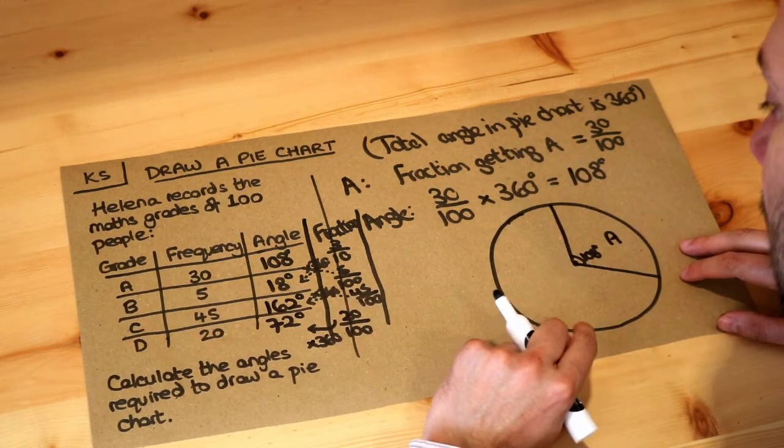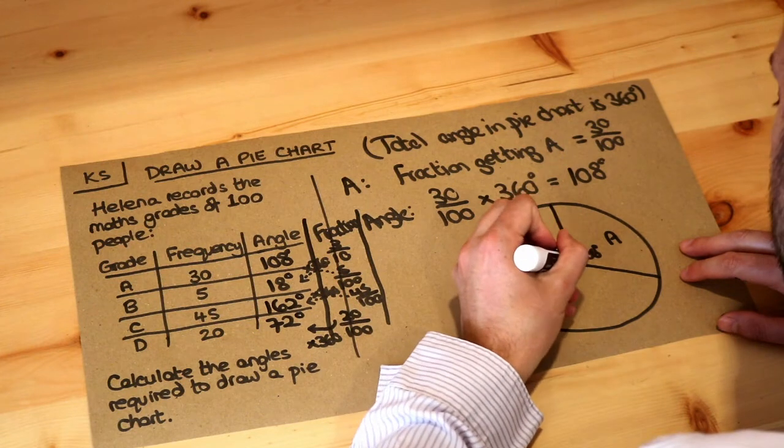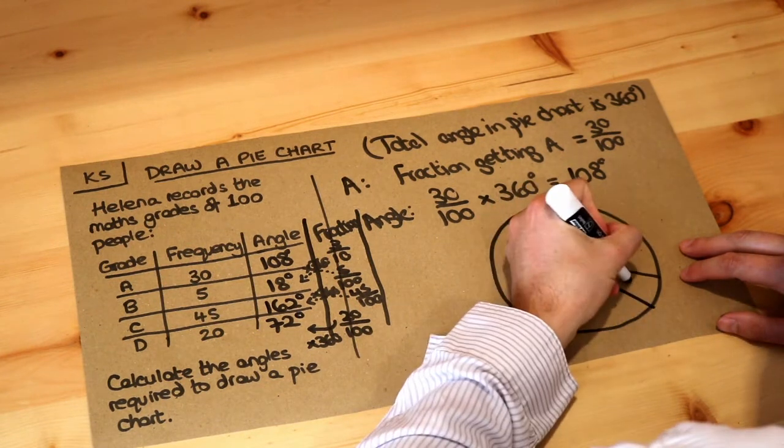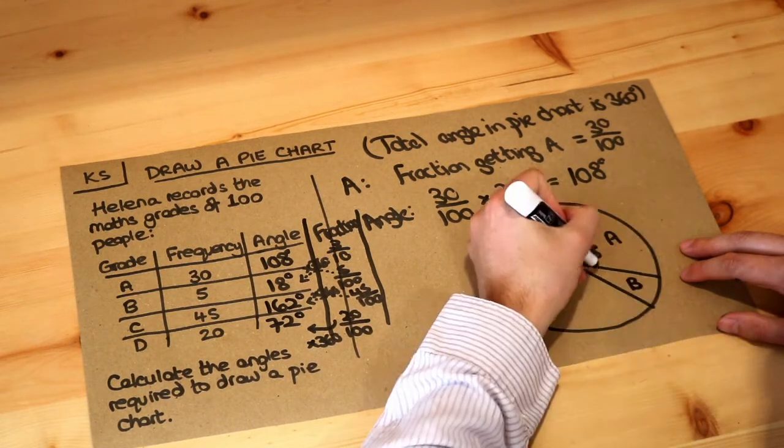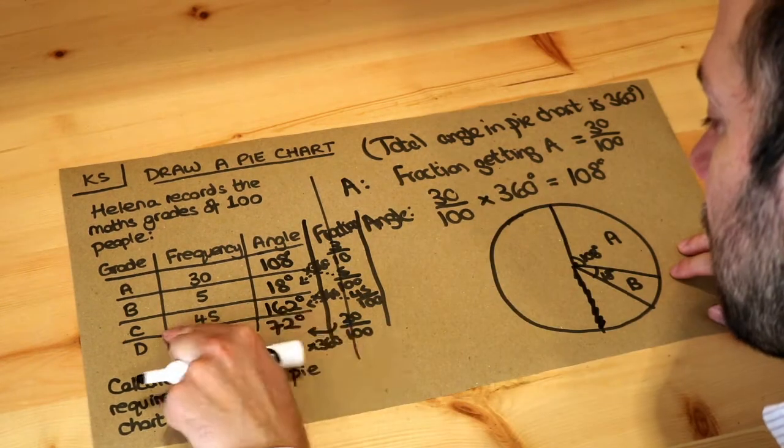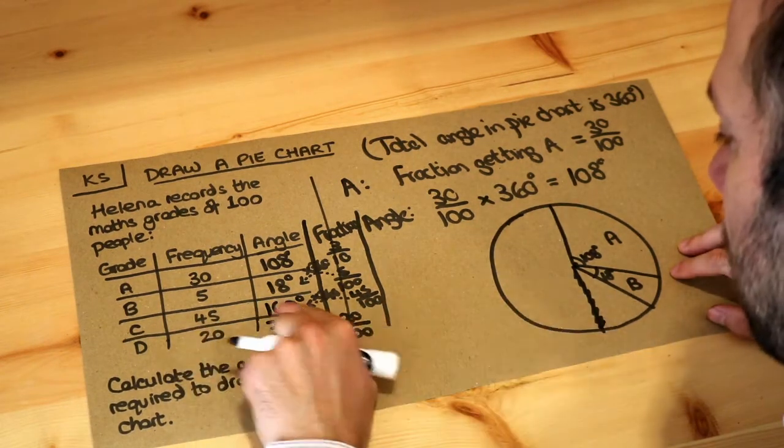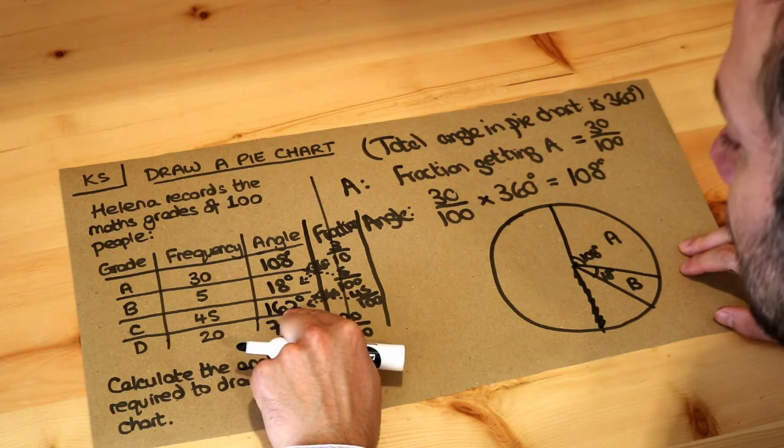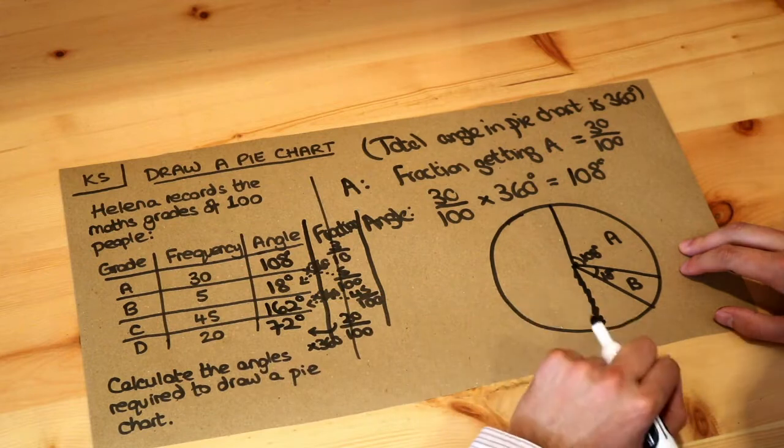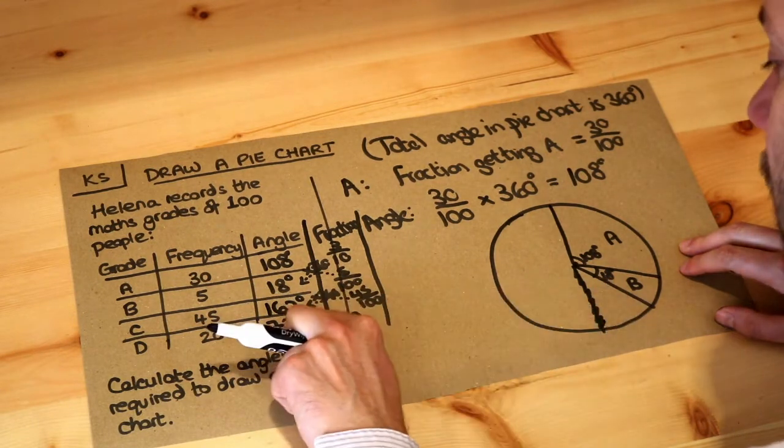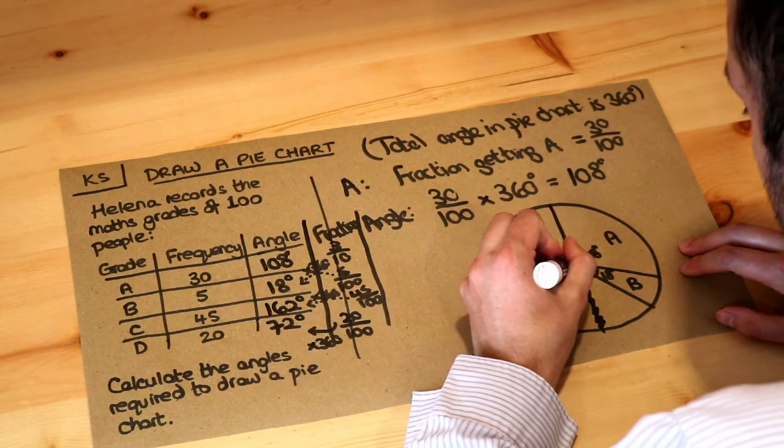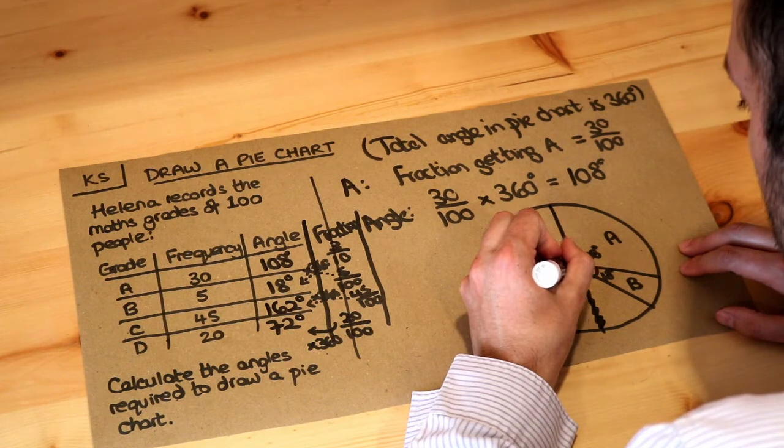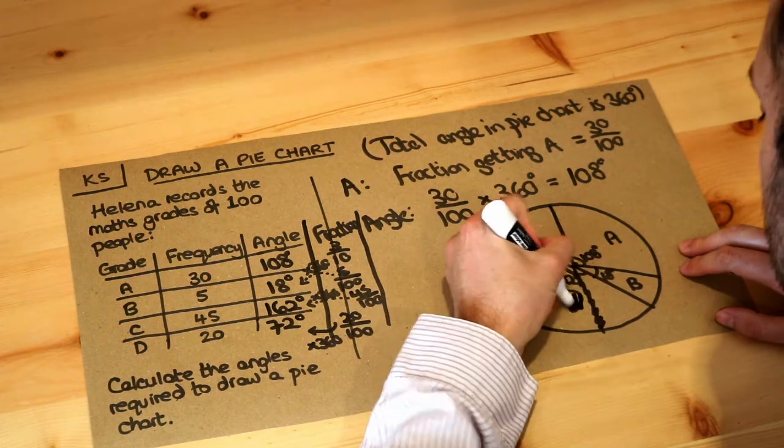Grade B is only 18 degrees, so that's going to be a relatively small angle. Now the angle for C, I almost done 45 degrees there, that was my mistake. I want 162 degrees. That's slightly less than 180 degrees, which would be a straight line. So it's going to be slightly less than half the people, so it's going to be a bit like this. That's a C.